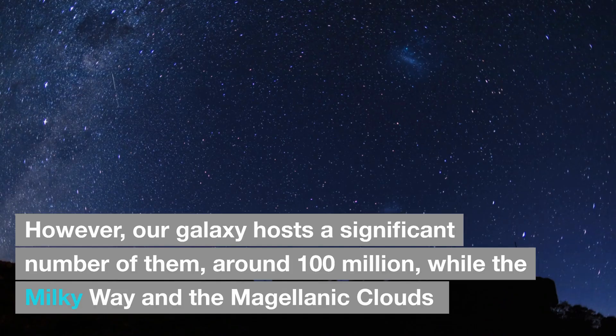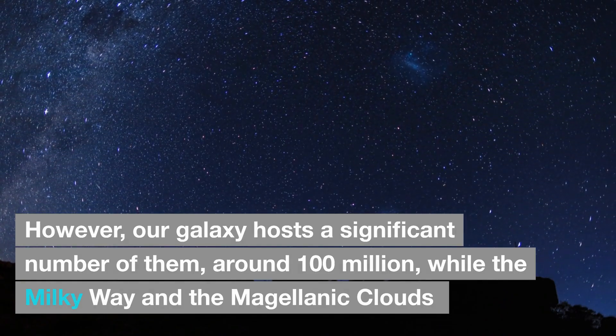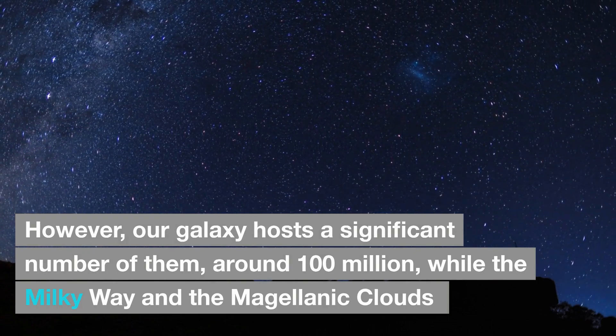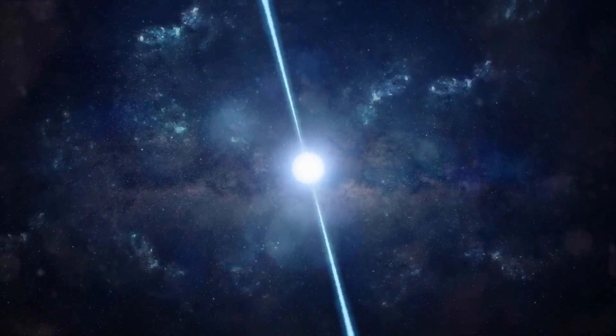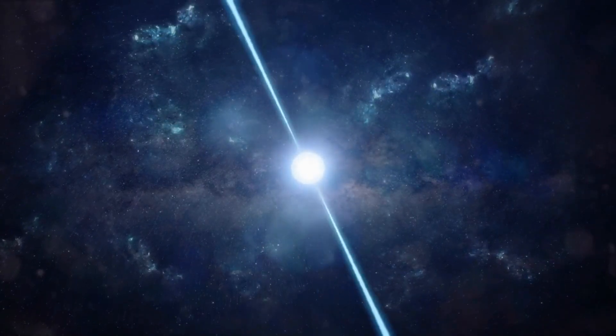Unfortunately, they are not always easy to detect. However, our galaxy hosts a significant number of them, around 100 million, while the Milky Way and the Magellanic Clouds alone have about 2,000 neutron stars known as pulsars.